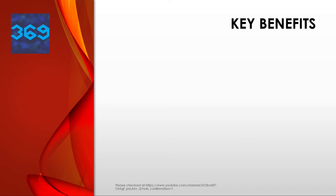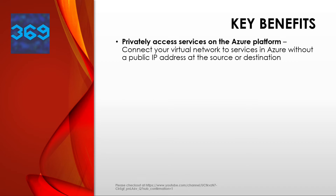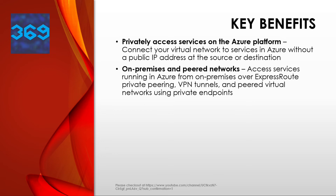Now let's look at the key benefits of Azure Private Link. The first benefit is privately accessing services on the Azure platform — you can connect your virtual network to services in Azure without a public IP address at the source or destination. Service providers can render their service in their own virtual network, and consumers can access those services in their local virtual network. The private link platform handles the connectivity between the consumer and services over the Azure backbone network.